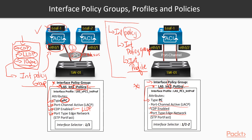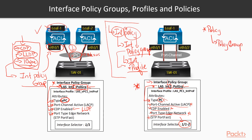Again: we create the policies for those interfaces, then attach the policy by creating a group and adding those policies inside the group, which finally gets applied into the interface profile. The interface profile contains the actual interface. For interface two, it's a port channel interface which will negotiate LACP as our link aggregation control protocol.